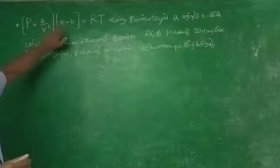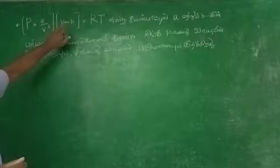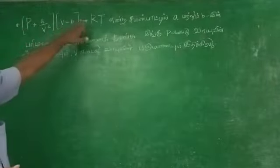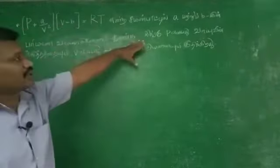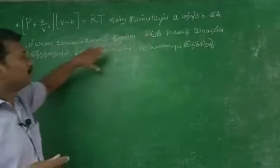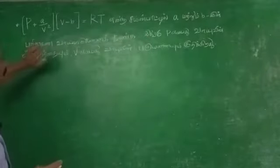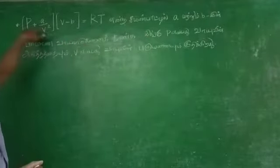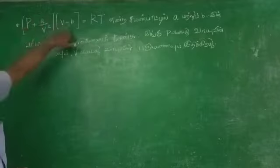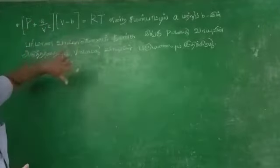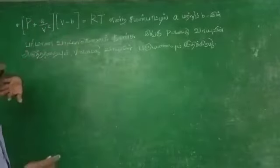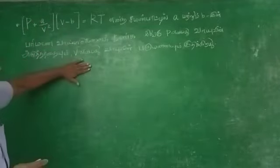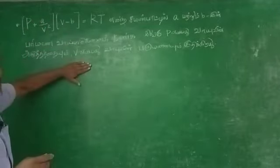This means PV is equal to RT. We will be able to get a copy of this exam.